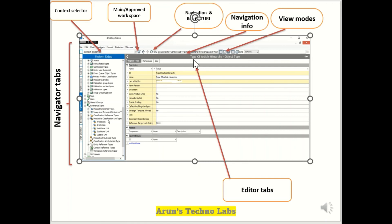Here is the navigation URL, navigation info, and view modes. For searching — using the search bar — when you type the ID, attribute ID, or attribute name, you can search and find results here.